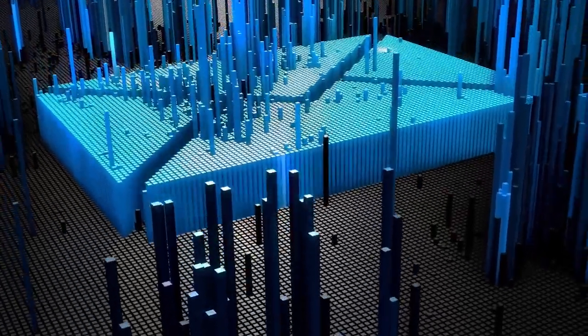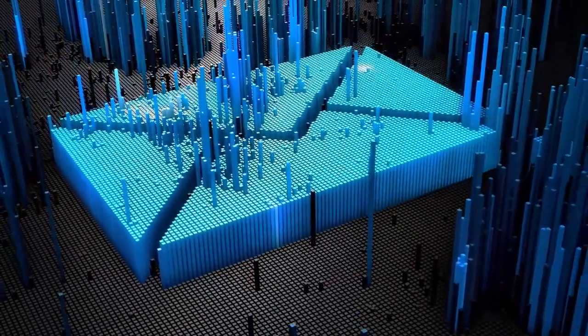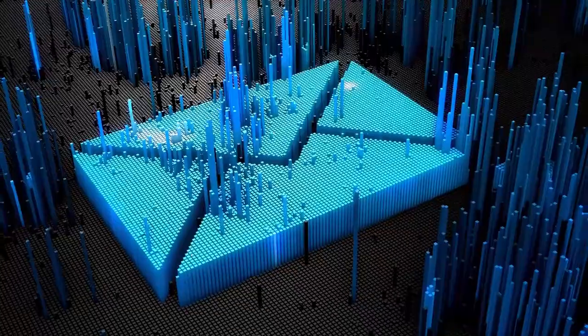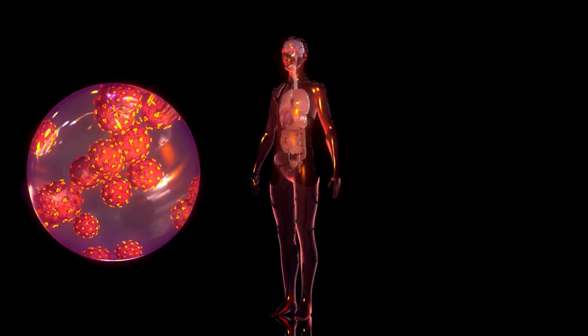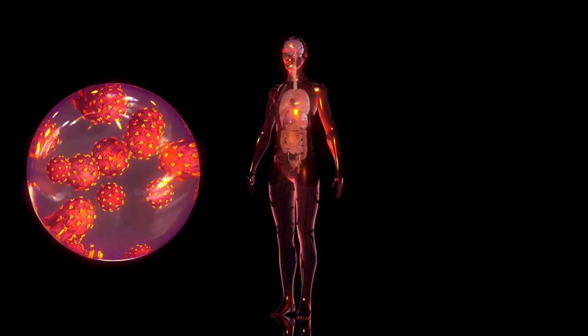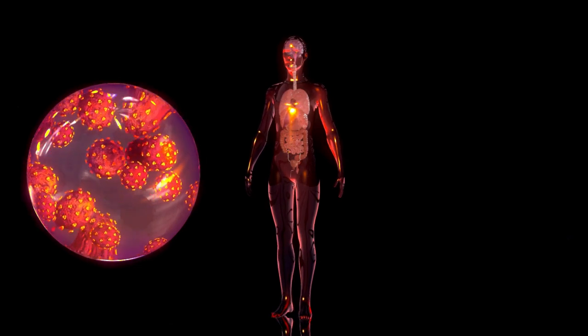The observable universe is the part of the universe that we can actually see and study using telescopes and other scientific tools. This part includes everything from nearby stars and planets to the farthest galaxies we can detect.